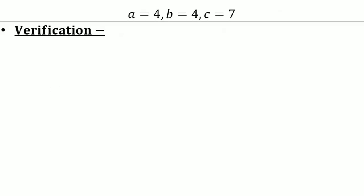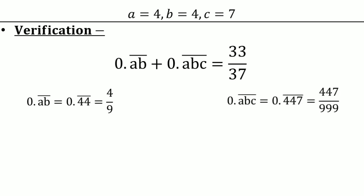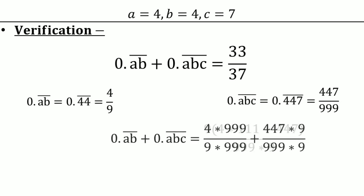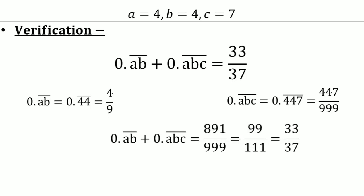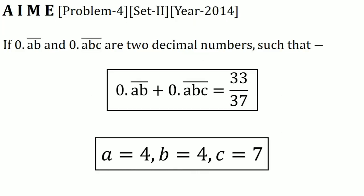To verify: 0.ab̄ = 0.4̄4̄ = 4/9, and 0.ab̄c̄ = 0.447̄ = 447/999. Adding these gives 4/9 + 447/999, which simplifies to 33/37 — matching the given value. All values a = 4, b = 4, c = 7 are confirmed correct.